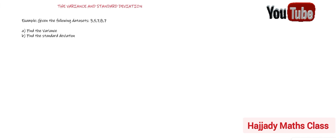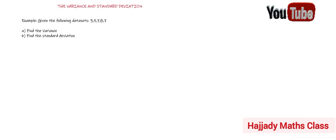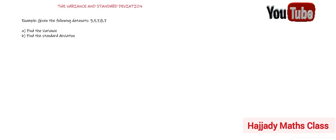When we talk about variance and standard deviation, this is just looking at the squared difference of members from the mean of the data — the deviation from the mean of the data.